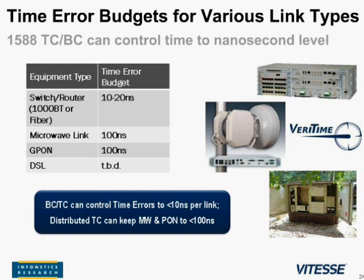With transparent clock and boundary clock technology, you can get down to the 10 nanosecond level or better for fiber-connected routers and switches, and microwave and PON links can be synchronized to about 100 nanoseconds. If you want to achieve one microsecond synchronization for TD-LTE or 500 nanoseconds for LTE Advanced, and you have multiple microwave or millimeter wave hops in your small cell backhaul network, you need to pay attention to each hop and stay within the time error budgets. There may actually be different timing requirements — tighter ones for switches and routers than for microwave links — just to make up the overall timing budget.